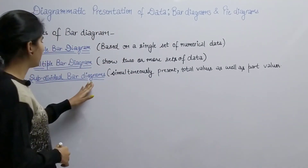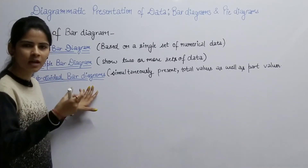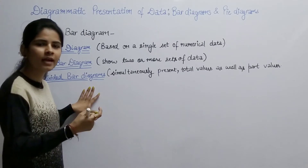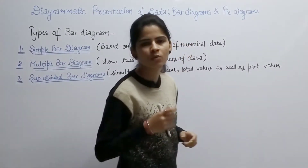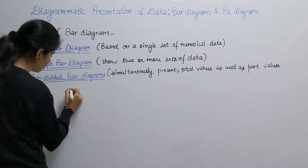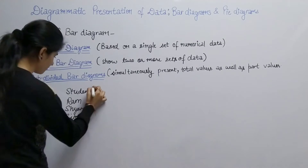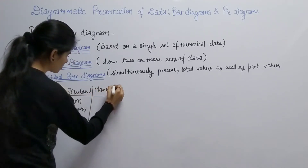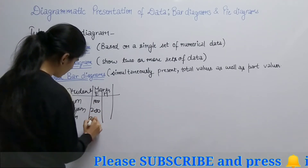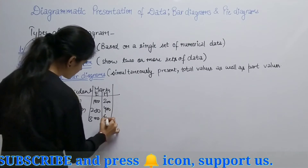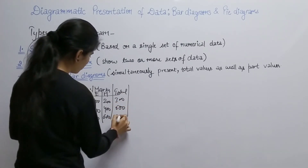The next type is our sub-divided bar diagram, also called the component or differential bar diagram. In this diagram, one rectangle represents both total values as well as the part values within it. Continuing the example: students are Ram, Shams, and Sita. English marks are 100, 200, and 300; Hindi marks are 200, 400, and 600; and the totals are 300, 600, and 900 respectively.